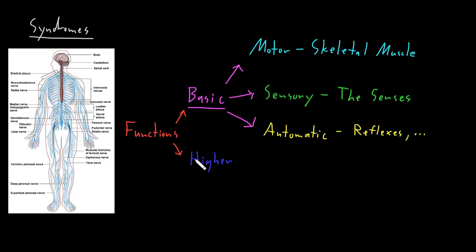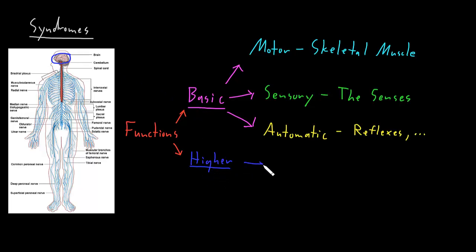The higher functions of the nervous system are not performed by huge areas of both the central and peripheral nervous system — the higher functions are performed by parts of the brain. Like the basic functions, I like to divide the higher functions of the nervous system into three big categories.